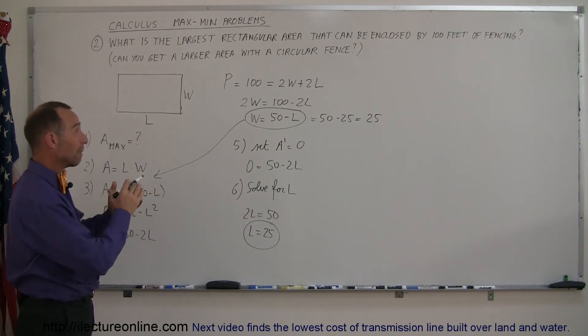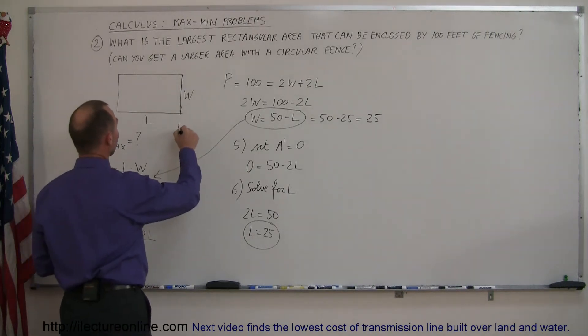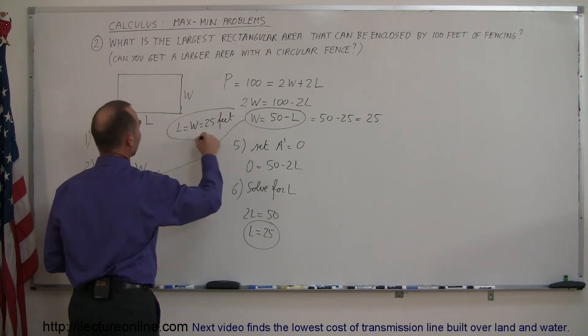But that means that the maximum area can be fenced in if you make it square instead of rectangular. So in this case, the L must equal the width, must equal 25 feet. That's the answer.